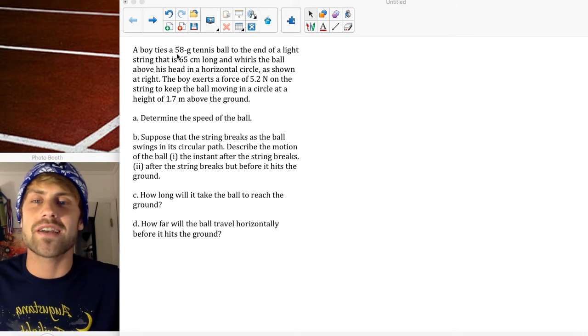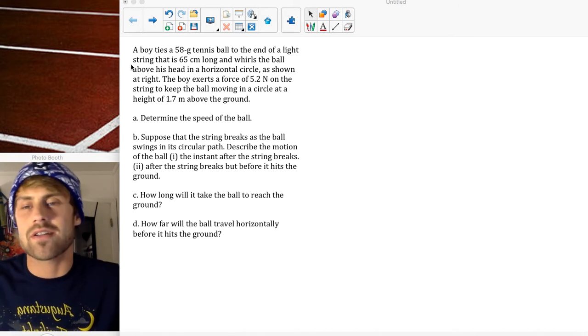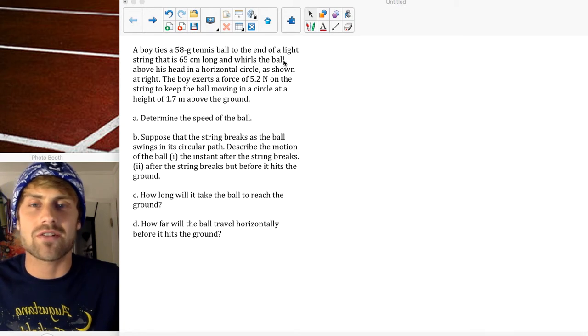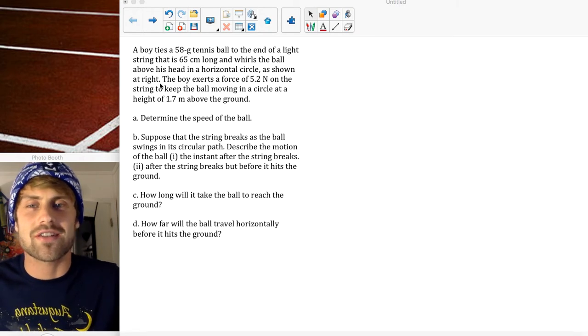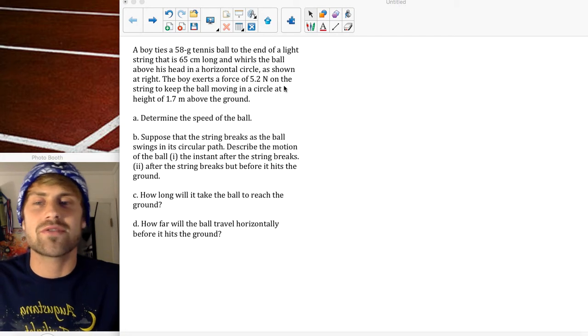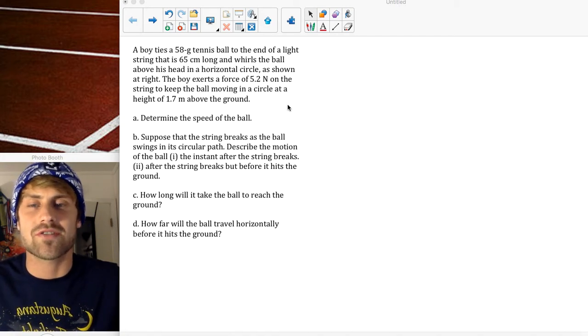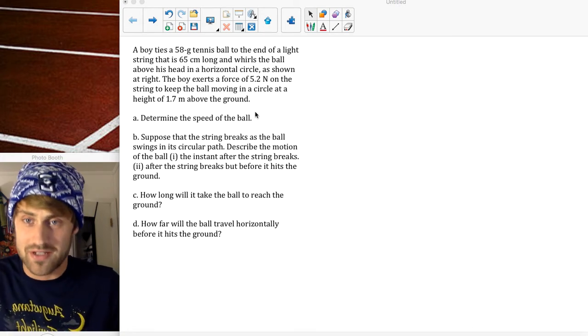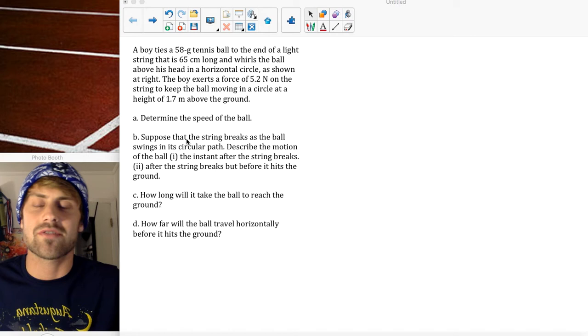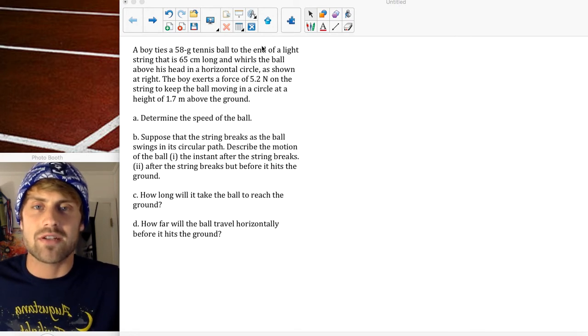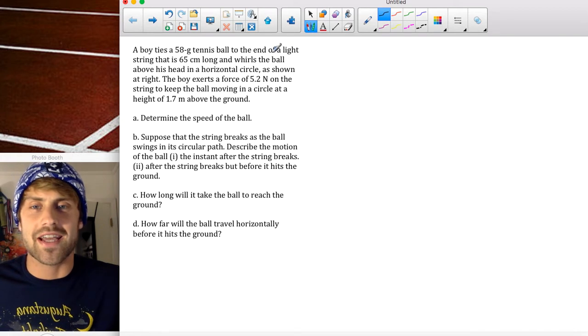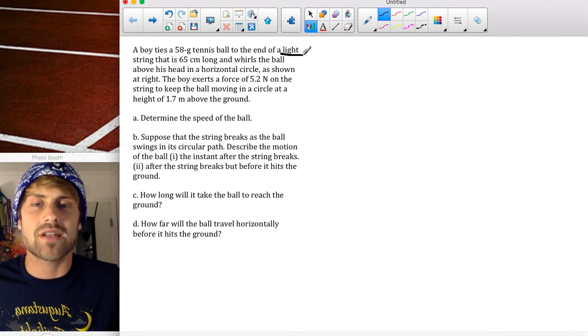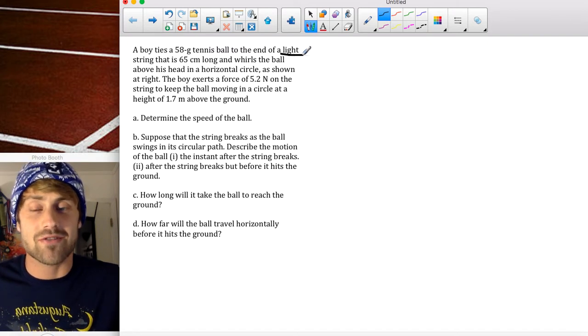So here's our problem. A boy ties a 58-gram tennis ball to the end of a light string that is 65 centimeters long and whirls the ball above his head in a horizontal circle. It is shown at right, which I deleted. I'll draw my own picture. The boy exerts a force of 5.2 newtons on the string and keeps the ball moving in a circle at a height of 1.7 meters above the ground. Part A, we're going to determine the speed of the ball. The first thing I need to do is change some things and talk about some of the numbers I was given. They're saying it's a light string because they want us to ignore the mass of the string.